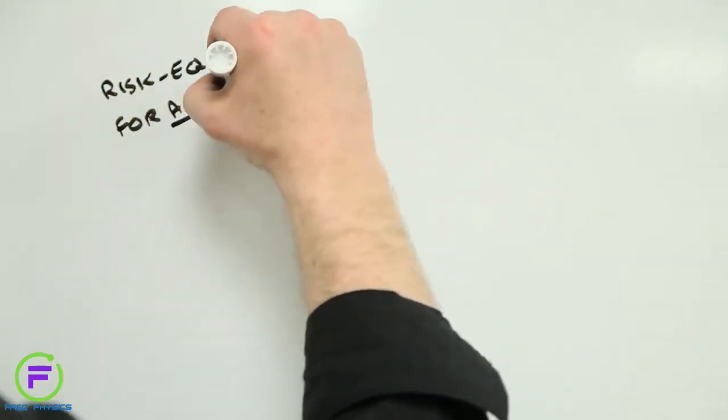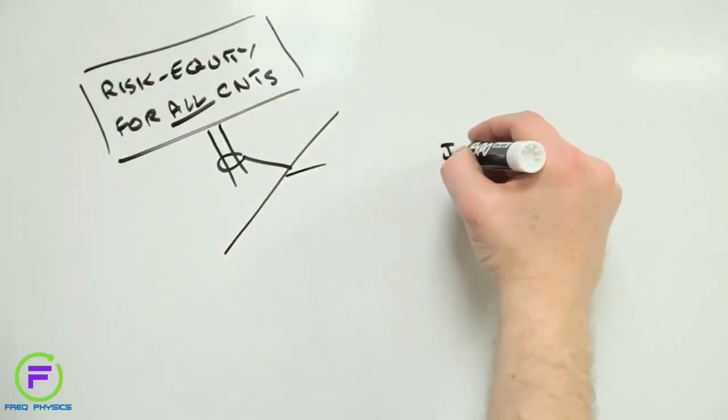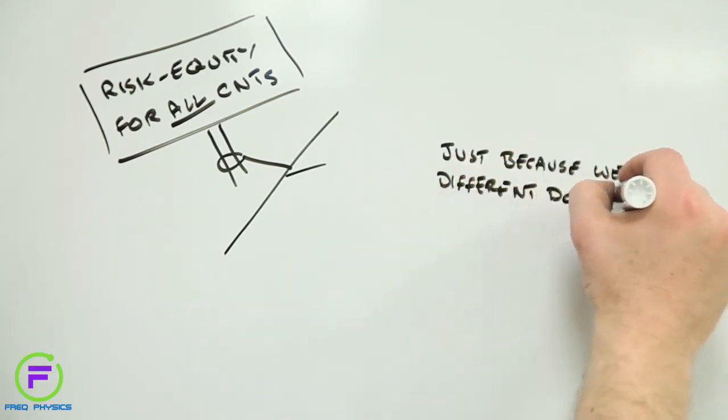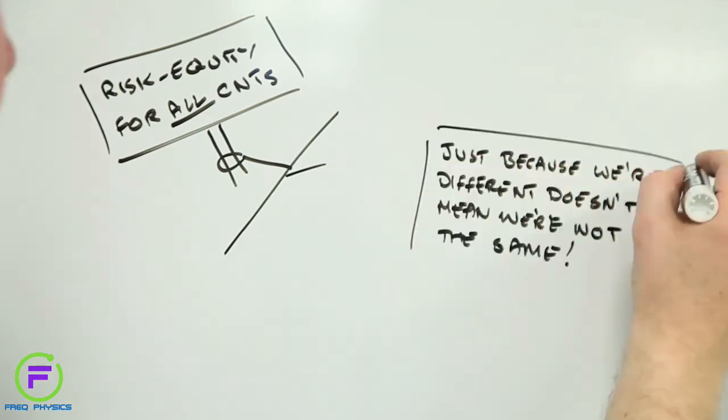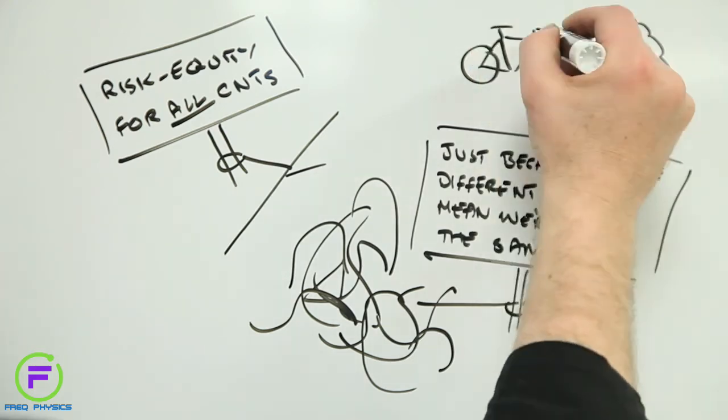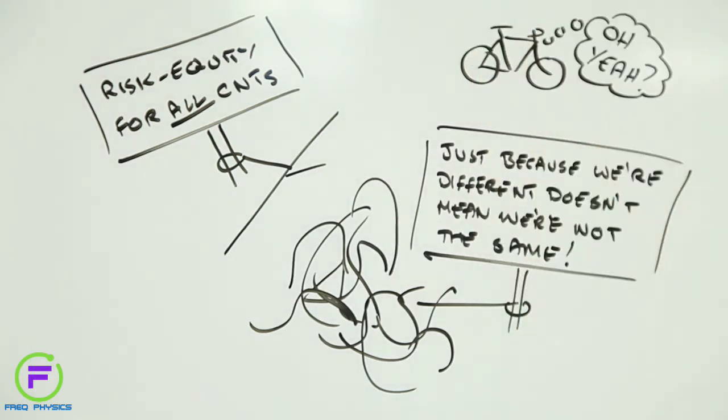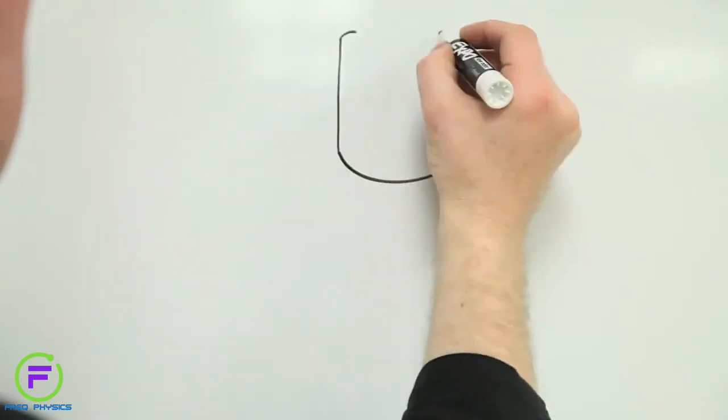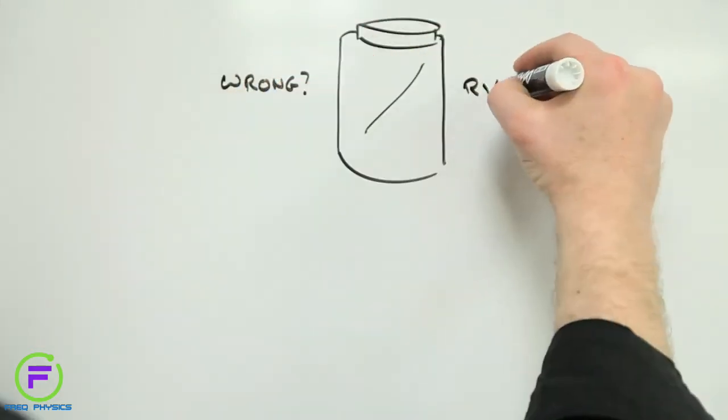The bottom line is that not all carbon nanotubes are created equal, and any residue of risk equity that might exist is further eroded by how they are used, which leaves us with a rather large challenge.